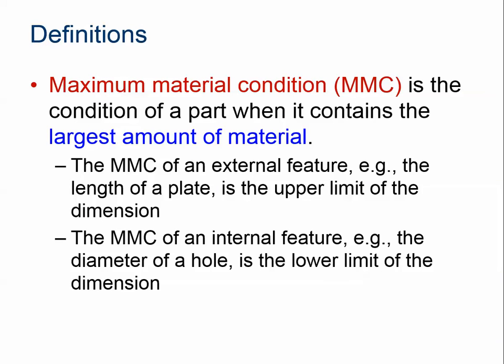Now let's talk about maximum material condition, or MMC. Basically, when you manufacture a part, if it uses the most amount of material, that's considered its MMC. This will generally happen if you have an external feature, like a plate — the MMC would just be the upper limit. So if you have a 3-inch long rod with a tolerance of 0.01, if it was 3.01 it's still going to use more material. So that's called an external feature.